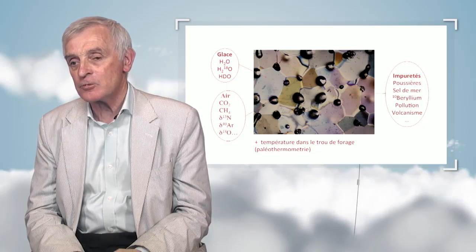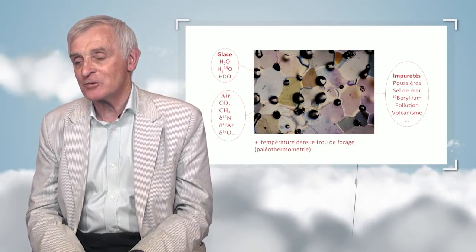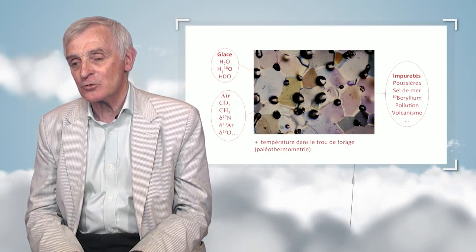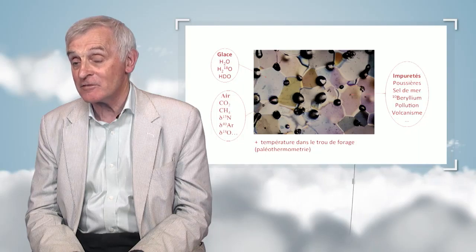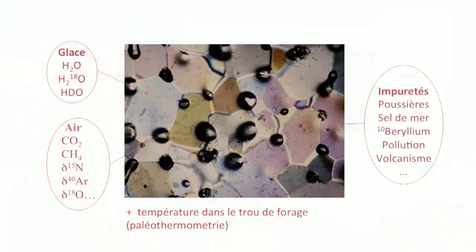Temperature decreases as we go towards the polar areas. Every time that rain is condensed into snow and ice, the precipitations are richer with oxygen-18 and deuterium than vapor. The vapor is therefore depleted as we move from equatorial areas towards the poles, which means we can reconstitute past climates by analyzing the ice. We can also extract air bubbles, which provide access to measurements of greenhouse gases such as methane, nitrous oxide, and CO2.